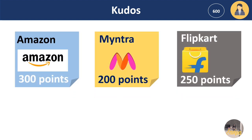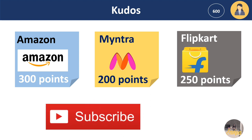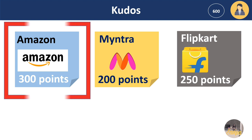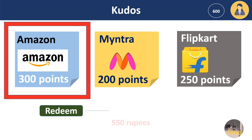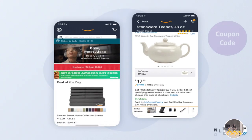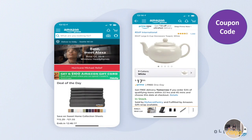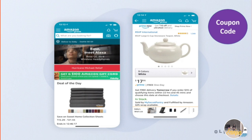In the rewards portal dashboard, there are many e-commerce sites listed such as Amazon, Myntra, Flipkart, and Tata Cliq. For example, for 300 points you can choose the Amazon option and click redeem — those points get converted to a rupee value, say 550 rupees. You'll receive a coupon code that you can use to purchase on Amazon, or add the amount to your Amazon Pay wallet.